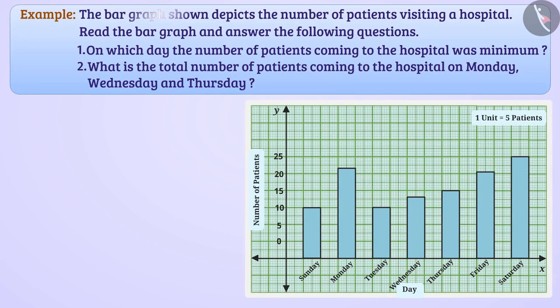The bar graph shown depicts the number of patients visiting a hospital. Read the bar graph and answer the following questions. On which day the number of patients coming to the hospital was minimum?